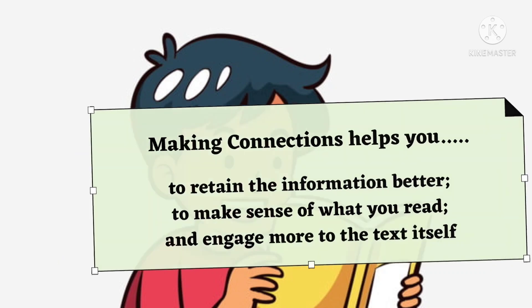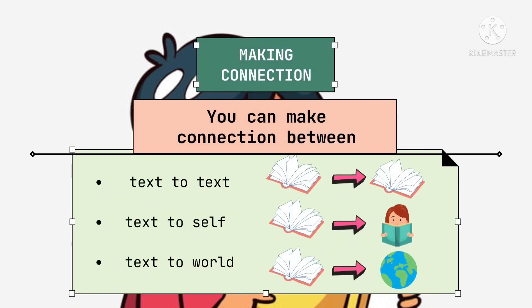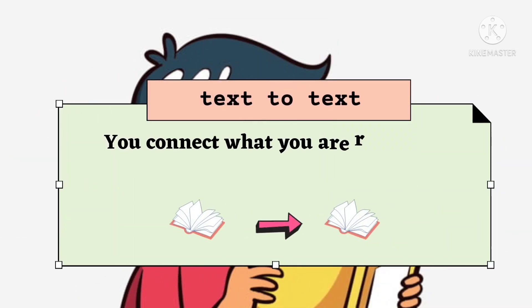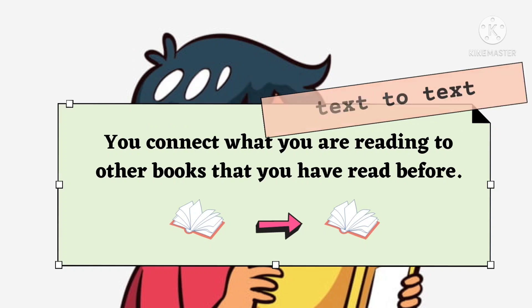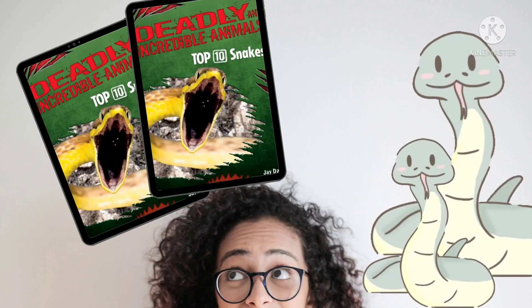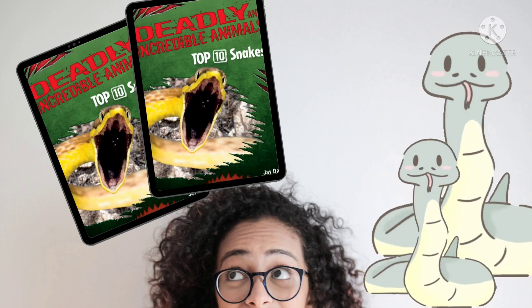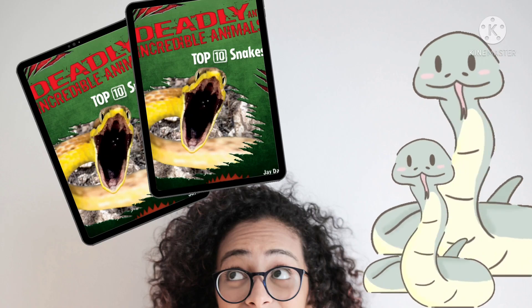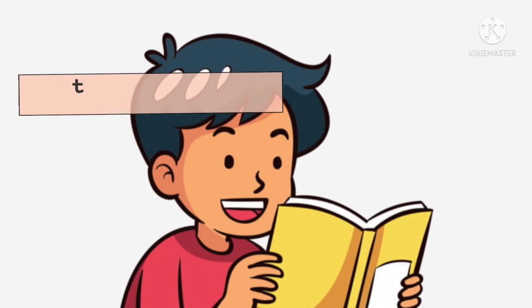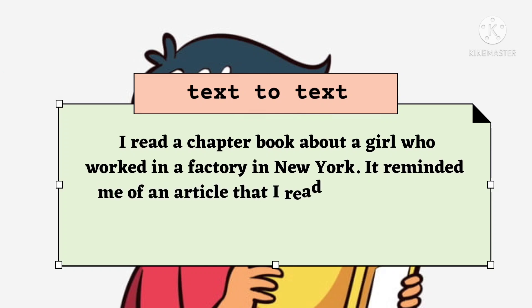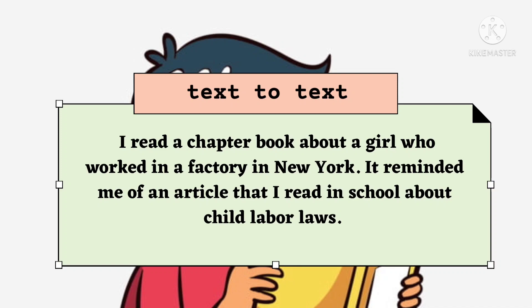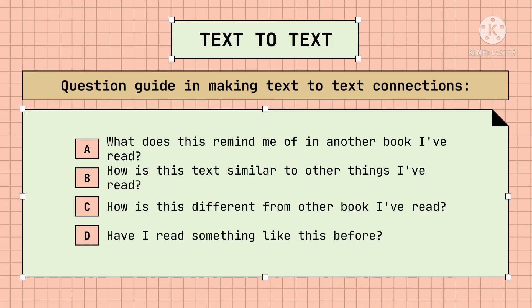And there are three types of making connection. You can make connection between text-to-text, text-to-self, and text-to-world. In text-to-text, you connect what you are reading to other books that you have read before. Just like for an example, I've read a book about venomous snakes. Then, I've remembered the top 10 dangerous snakes of the world. And here are some examples of text-to-text connection: I read a chapter book about a girl who worked in a factory in New York. It reminded me of an article that I read in school about child labor laws. And here are the four guide questions in making text-to-text connections.